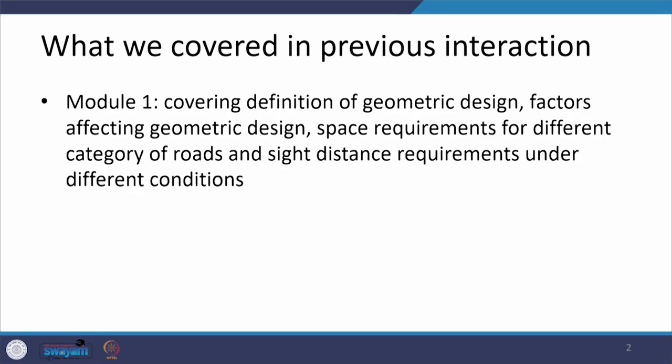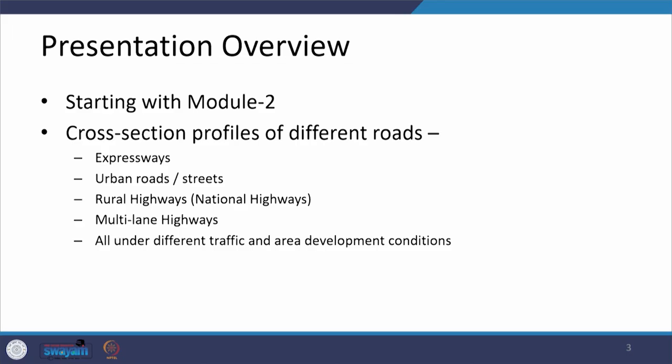Dear students, today we are going to start with a new lecture on geometric design. We have already completed module 1, where we covered the definition of geometric design, the various factors which affect geometric design, the requirement of spaces for different categories of roads in the lateral direction, and the side distance requirements under different traffic operation conditions as well as terrain conditions. Now the next thing we can start with is the idea about cross sectional profiles which can be provided for different categories of roads.